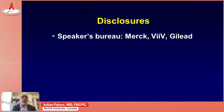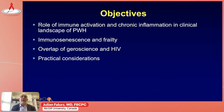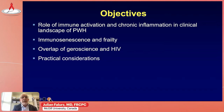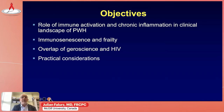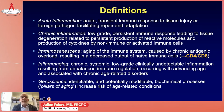Hello. Today we'll be talking about the approach to treated patients with HIV and interaction with chronic inflammation. What I intend to do over the next few minutes is to briefly recap the role of immune activation and chronic inflammation in the clinical landscape of treated patients with HIV, make a connection between immunosenescence and frailty, discuss the overlap of the emerging field of geroscience and HIV, and finish with a few practical considerations.